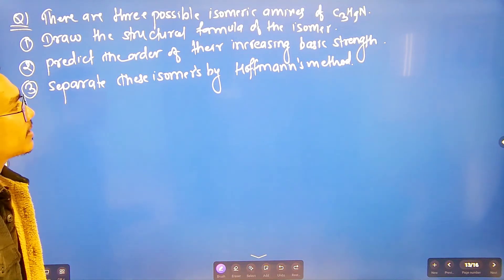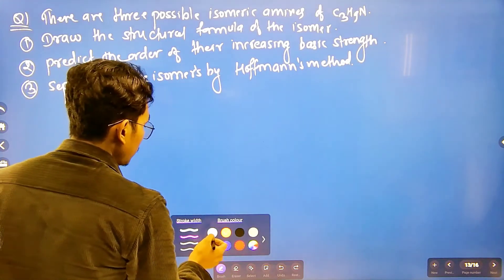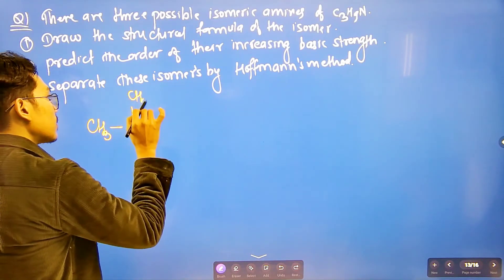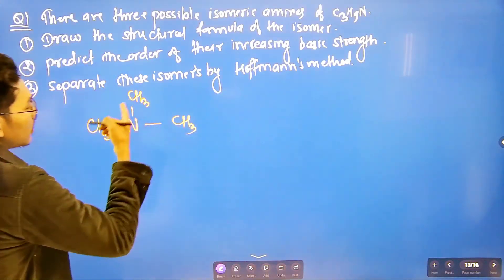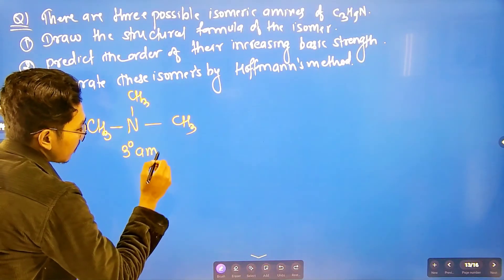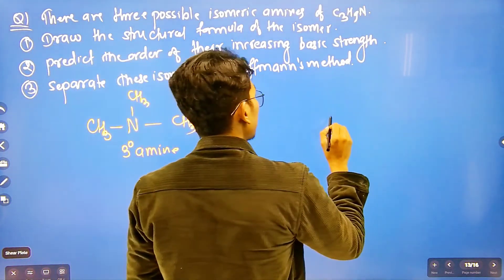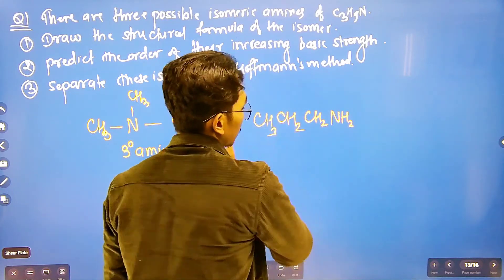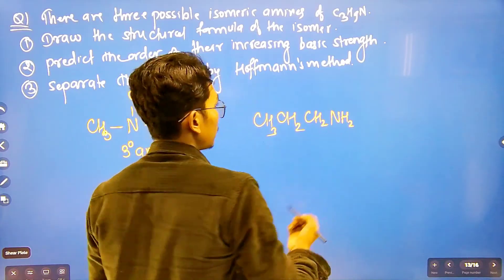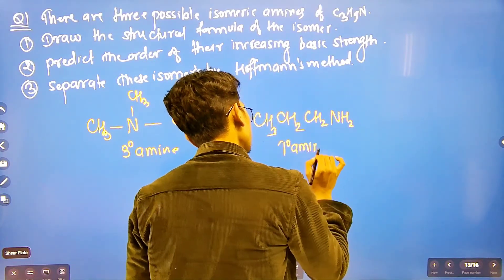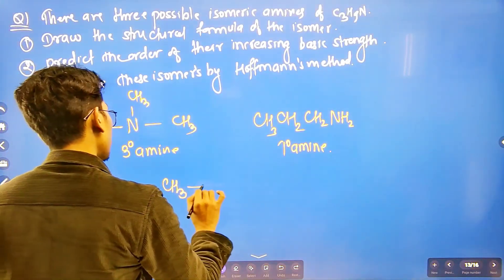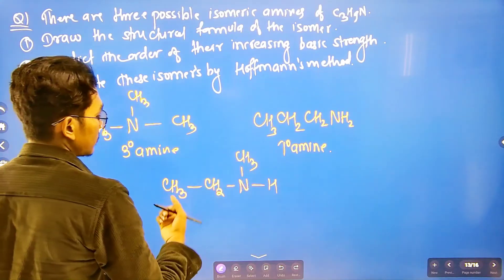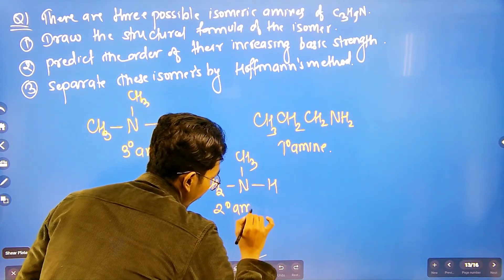There are three possible isomers of amines with formula C3H9N. We can see C3H9N for tertiary amine. We will have structures like C3 groups. C3H9N — if anyone knows, this is a primary amine example. For secondary amine: CH3-NH-C2H5 — count the hydrogens: 3+3+6+7+8+9 — this gives a secondary amine.